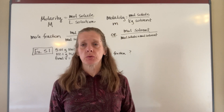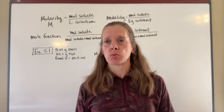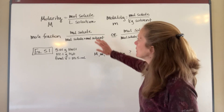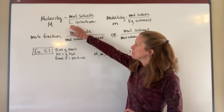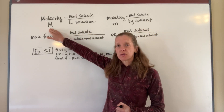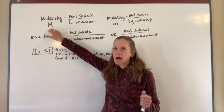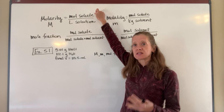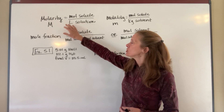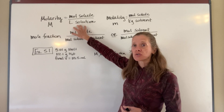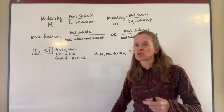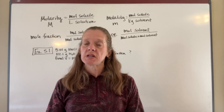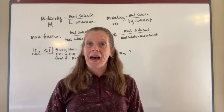We're going to be doing quite a few calculations with these things, so you want to make sure they are really easy for you. Molarity is usually abbreviated with a capital M and it is calculated by taking the moles of the solute — remember that's the thing that is dissolved — divided by the liters of solution. It's not liters of the solvent; it's liters of solution, so it's how much you end up with at the end.